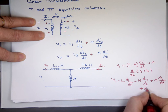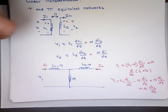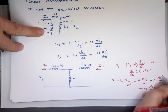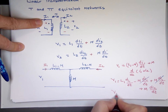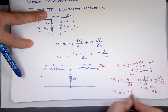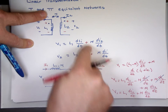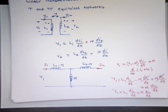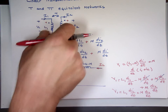Expanding that: L1·dI1/dt minus M·dI1/dt plus M·dI1/dt plus M·dI2/dt. The middle terms cancel, and you end up with V1 equals L1·dI1/dt plus M·dI2/dt — isn't that the same equation? And if we derive V2 for this circuit it would be the same as well. So this T circuit is equivalent to the original coupled inductor circuit.